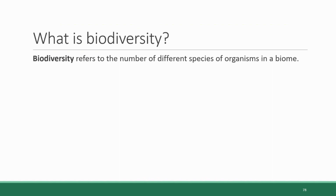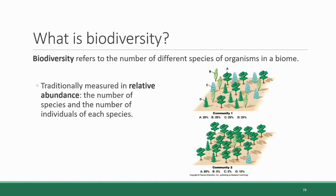This brings us to the question of what is biodiversity and how do we measure it. As we defined earlier in the chapter, biodiversity refers to the number of different species of organisms present in a biome. Traditionally, biodiversity has been measured in terms of relative abundance, which includes the number of species and the number of individuals of each species in an ecosystem. Both of these communities have the same number of species of trees — there are four different trees in each area. However, community number two on the bottom has 80% of the trees as a single species, whereas in community number one on the top, the four species are evenly distributed. So community number one has a higher relative abundance of each species and is therefore more biodiverse.